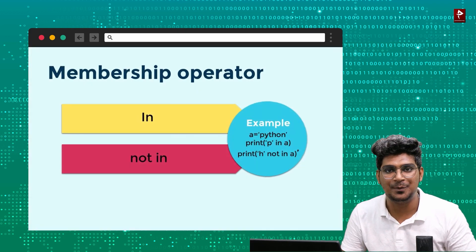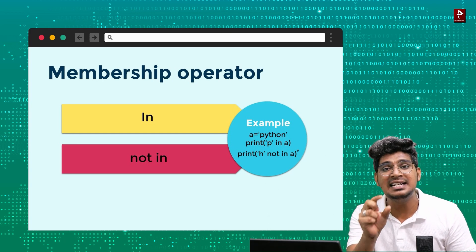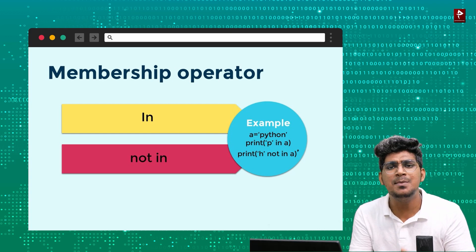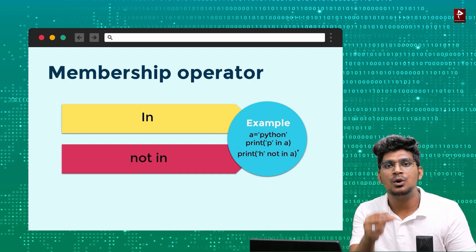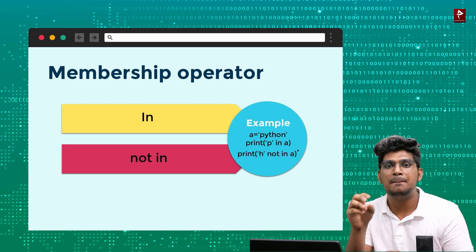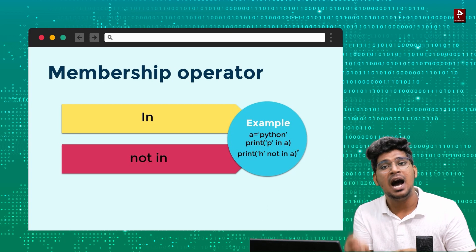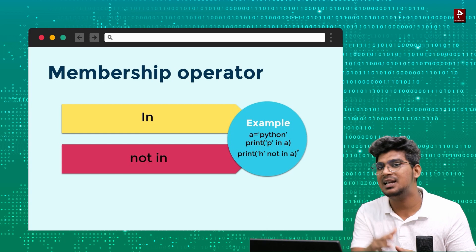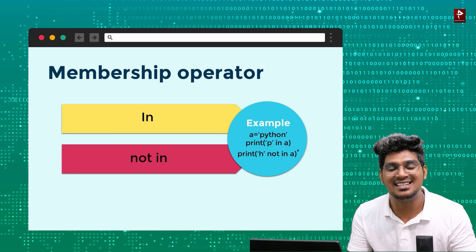The next operator is the membership operator, which has two types: the 'in' operator and the 'not in' operator. It returns true or false. For example, if we check whether the character 'P' is in the name variable, and P is present, the output will be true.